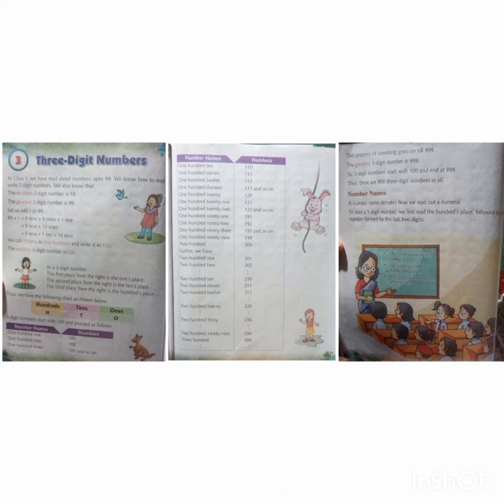And this way it is continued. So in this chapter we will learn about three digit numbers till 1000. This process of counting goes until 999. The greatest three digit number is 999. So remember: three digit numbers start with 100 and end at 999. Thus there are 900 three digit numbers in all.